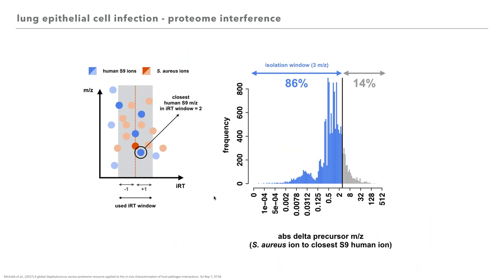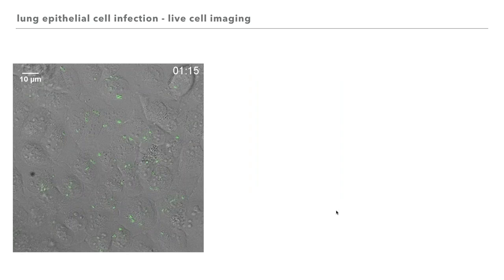In the DDA-MS approach, ions were selected in an isolation window of 3 m/z in our setting. To determine if human peptide ions in the mixture were interfering inside the isolation window, we used ions detected in the DIA-MS approach and searched for the closest human precursor m/z in an iRT window of plus or minus 1 for every detected S. aureus ion. The S. aureus and closest human precursor m/z were used to calculate the difference in precursor m/z. As a result, nearly 86% of S. aureus ions were contaminated by an interfering human precursor inside the isolation window.